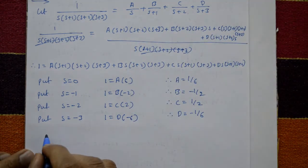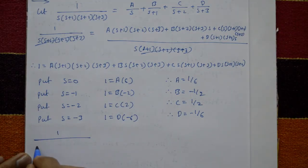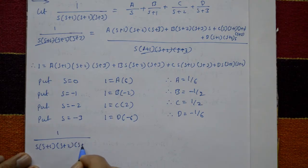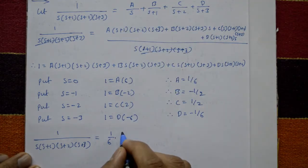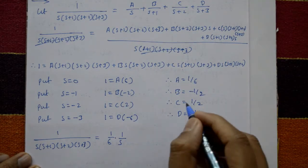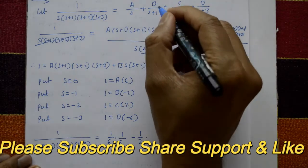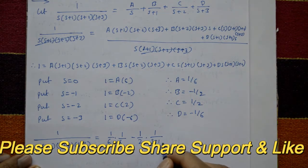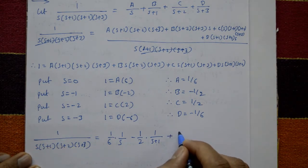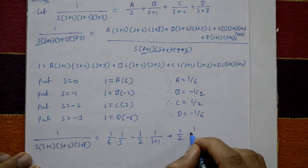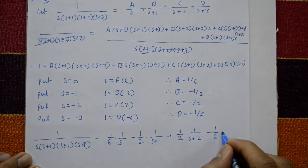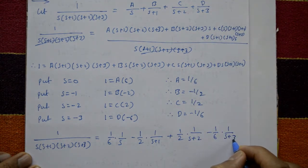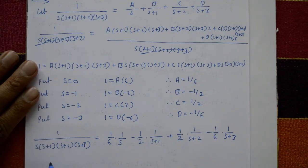Substituting A, B, C, D back: 1 upon s into s plus 1 into s plus 2 into s plus 3 equals 1 by 6 into 1 upon s, minus 1 by 2 into 1 upon s plus 1, plus 1 by 2 into 1 upon s plus 2, minus 1 by 6 into 1 upon s plus 3. Now apply the inverse Laplace transform on both sides.